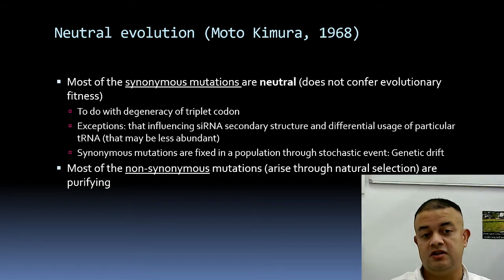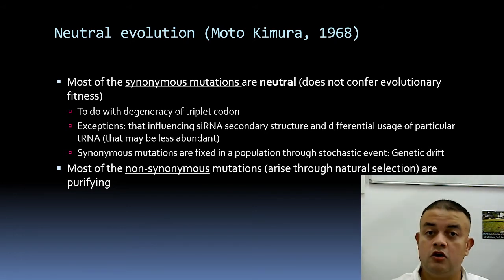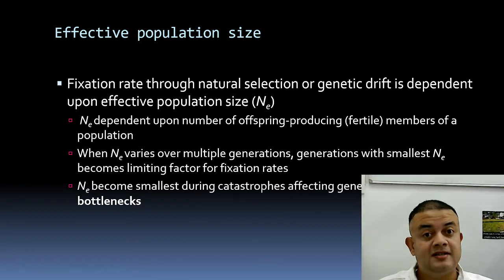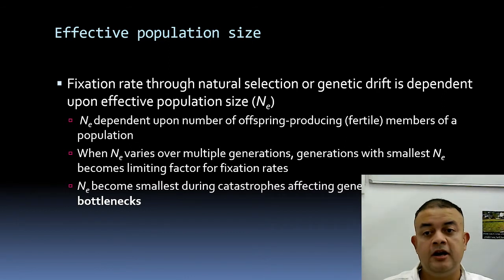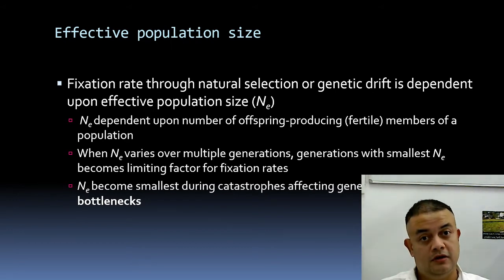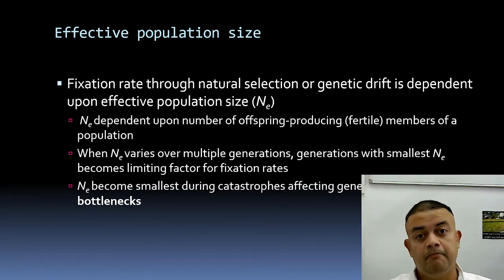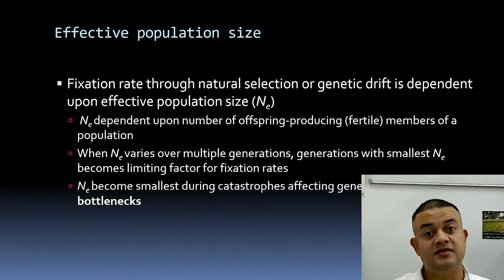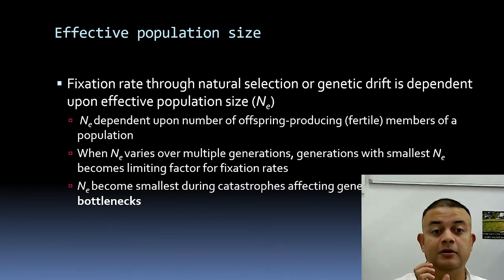Most non-synonymous mutations that arise are purified by natural selection — purifying means getting rid of deleterious mutations. Neutral selection also depends heavily on effective population size (Ne). Fixation through natural selection or drift is dependent on Ne, which counts only the offspring-producing or fertile members of the population. Old people and infertile individuals are not counted. By looking at Ne alone, you can determine whether genetic drift or natural selection is favored.